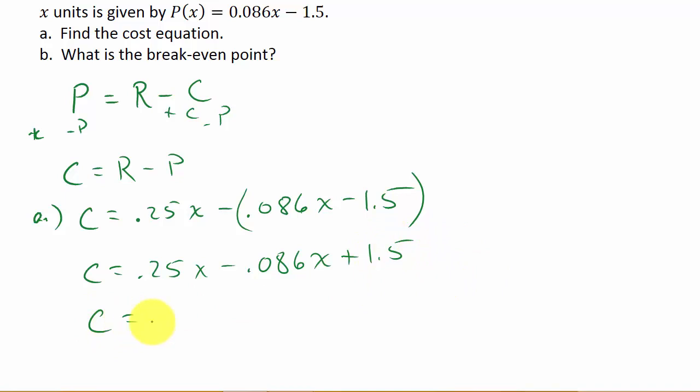And so I get my cost function is .25x minus .086x plus 1.5. So that's going to be .25 minus .086, and that's going to be .164x plus 1.5. And so, there's the cost function. There's my cost function. Now, and that's the answer to part a.